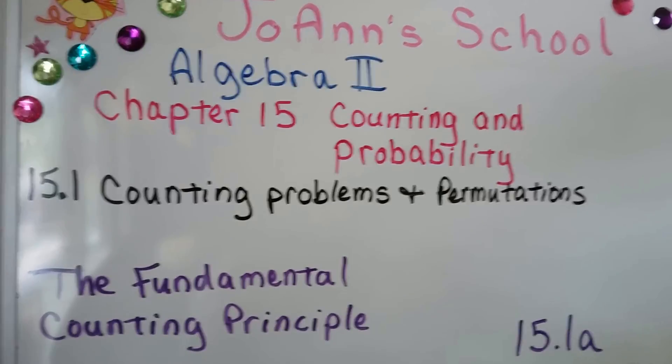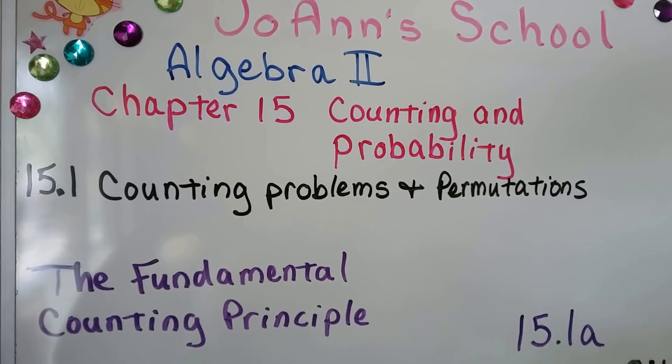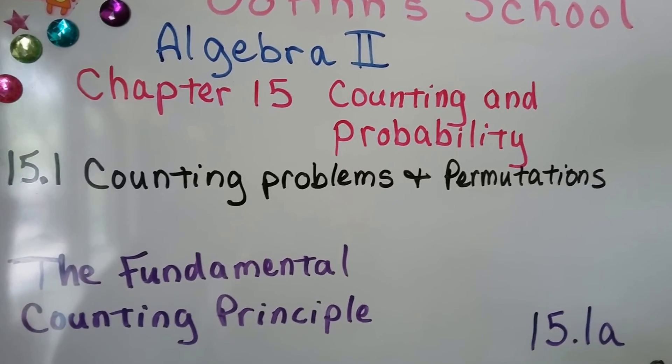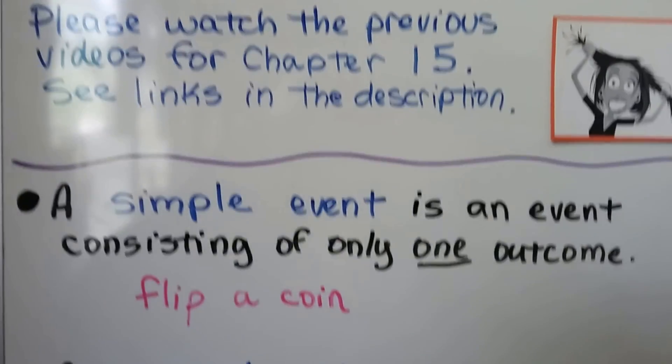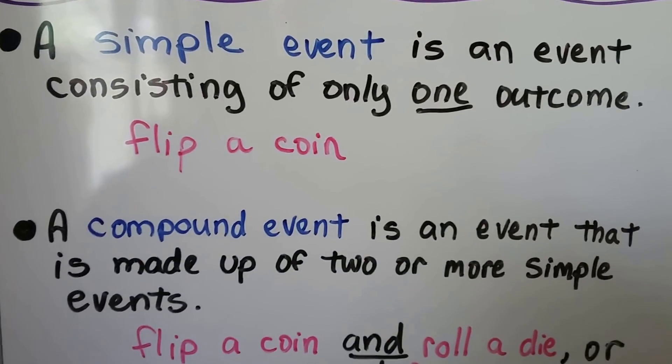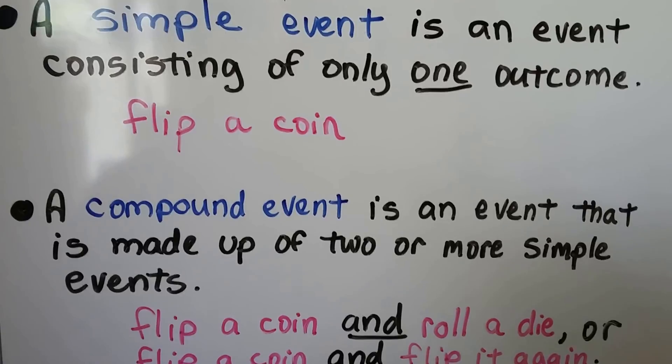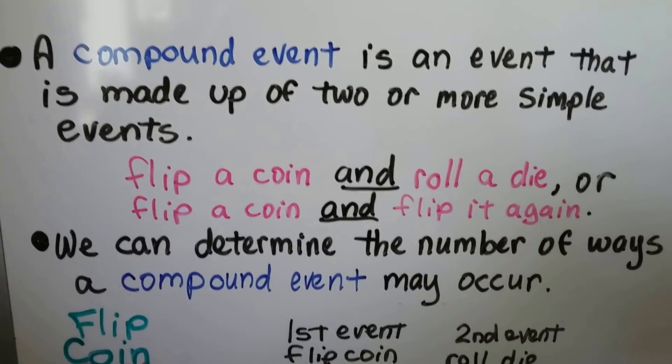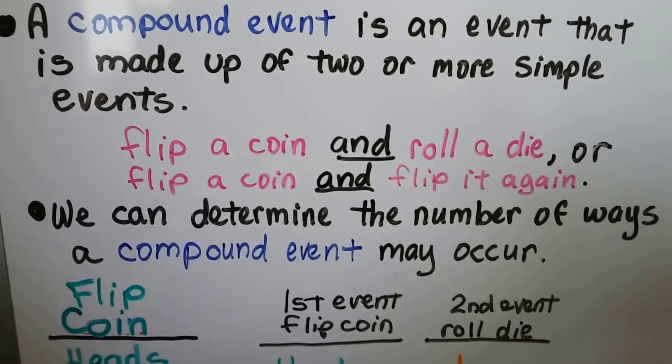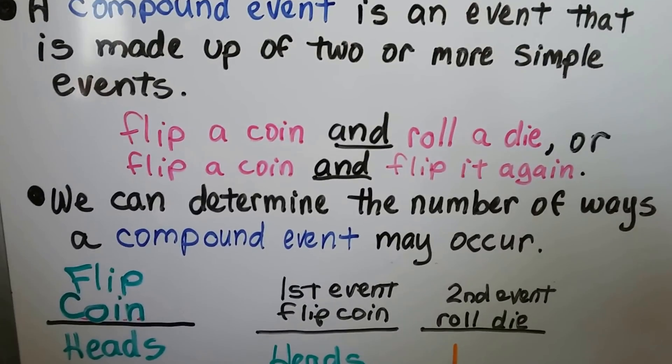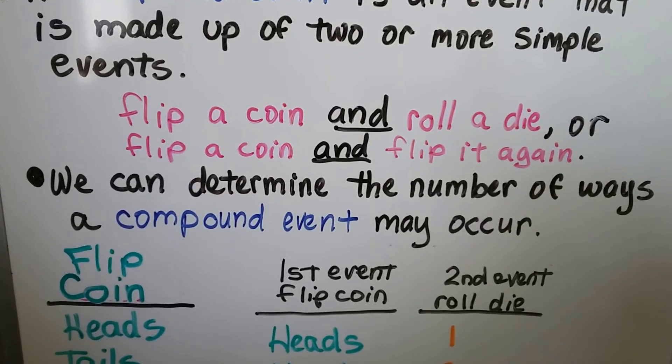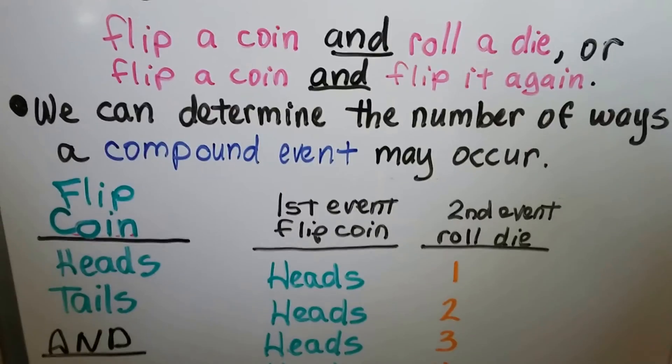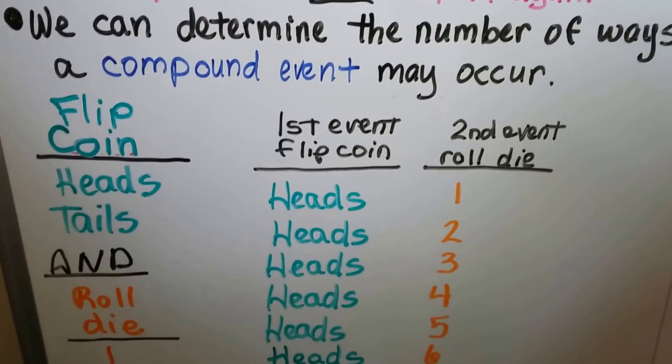We're on to a new chapter. This is about counting problems and permutations. This is the Fundamental Counting Principle number 15.1a. A simple event is an event consisting of only one outcome, like flipping a coin. A compound event is an event that is made of two or more simple events. So if we flip a coin and roll a die, or if we flip a coin and then flip it again, that would be compound. And we can determine the number of ways a compound event may occur.